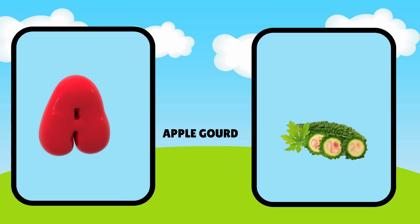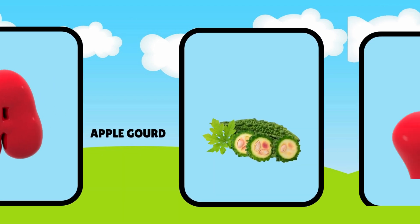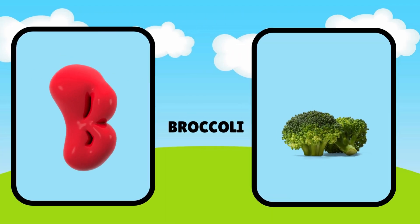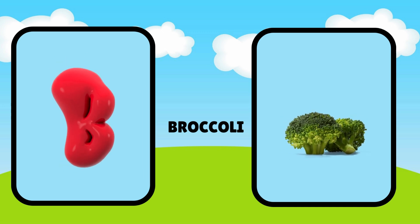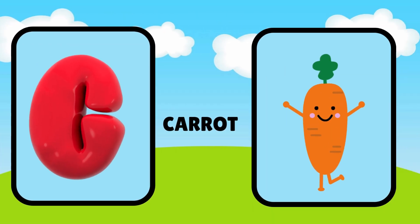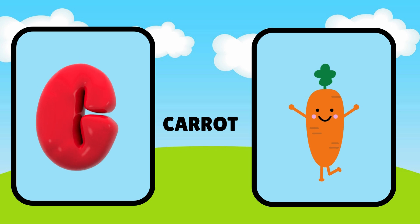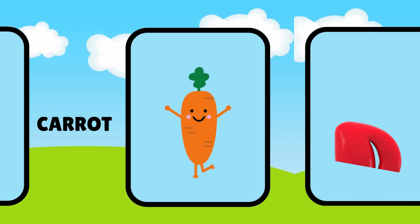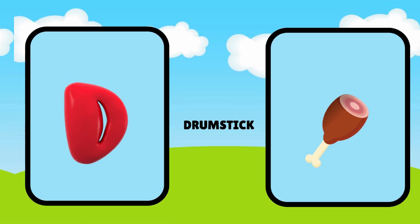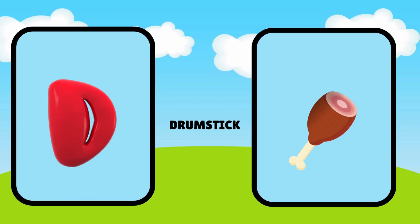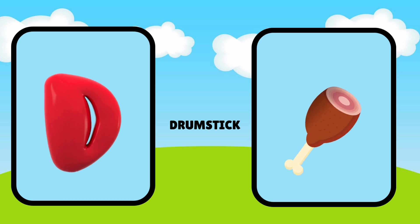A is for apple gourd, apple gourd. B is for broccoli, broccoli. C is for carrot, carrot. D is for drumstick, drumstick.